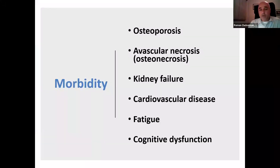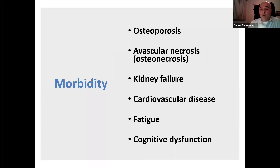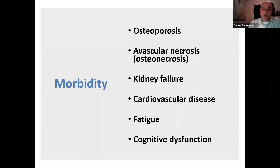Comorbidities associated with lupus include osteoporosis — often due to prolonged steroid use — avascular necrosis typically affecting the femur and hip bone, kidney failure from lupus nephritis (which can lead to hemodialysis), cardiovascular disease, significant fatigue, and cognitive dysfunction including psychosis and depression.